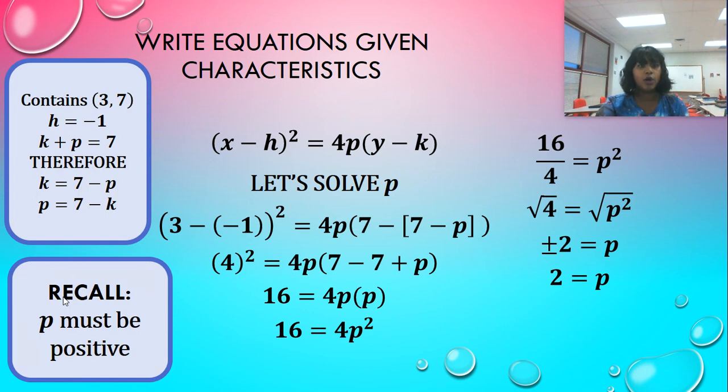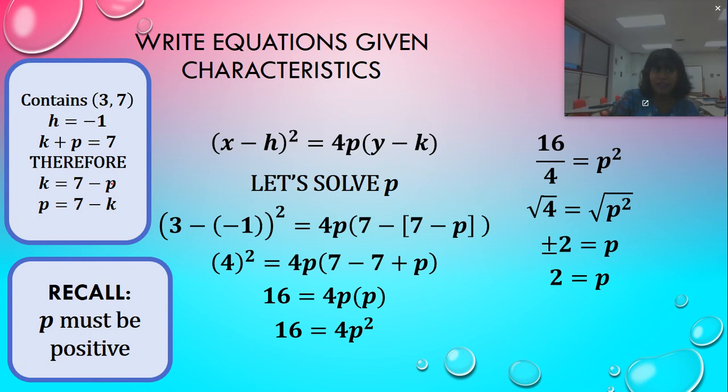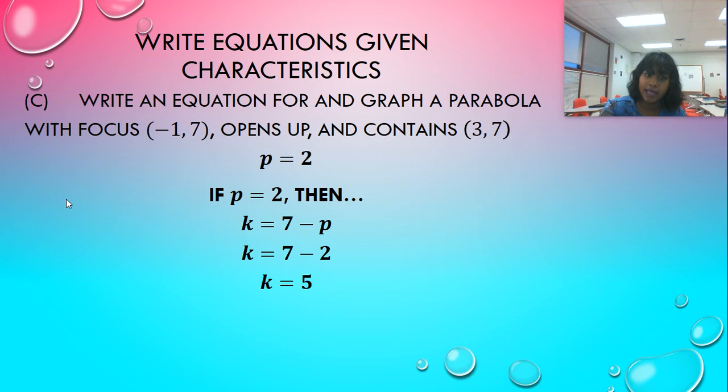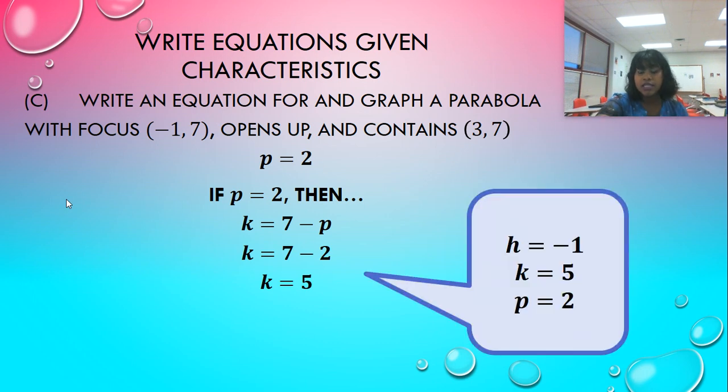So if I know P equals two, I can go back and solve for K. You could have plugged it back into this formula, but why not simply plug it in here to solve for K? So that's exactly what we're going to do. And I plug it in, and I recognize that K is five. Let's just triple check some stuff that we know. Since it's opening up, should P be positive? Yes, and our P value is positive. Since we knew that P was, or K was equal to, sorry, P was equal to 7 minus K, and P must be positive, then K must be less than seven, and K is five, which is less than seven. So again, cracking that puzzle, breaking it back, we're just checking our characteristics makes sense.